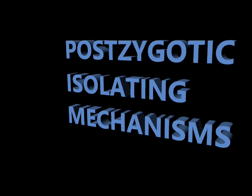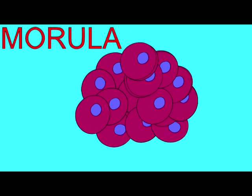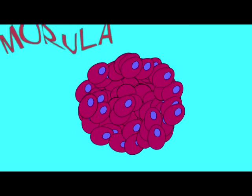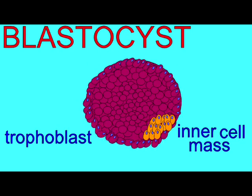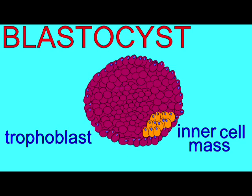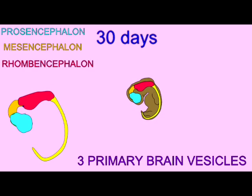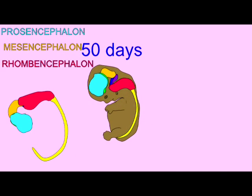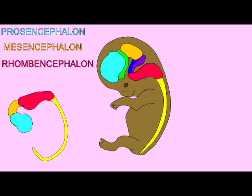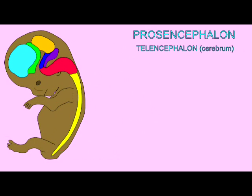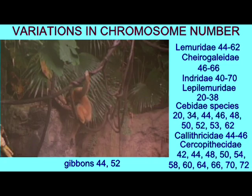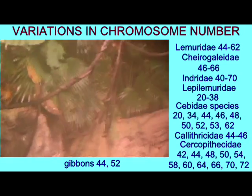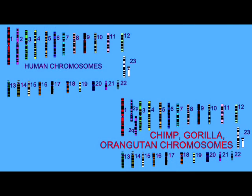After mating has occurred, there are a number of post-zygotic isolating mechanisms which might lead to the isolation of populations simply because their offspring do not thrive or may not even be born. While we simply do not know if this was ever a factor in the isolation of separate hominid groups, it is likely that at some point it was, given the genetic differences between humans and chimps.